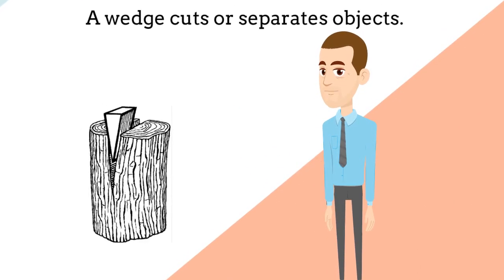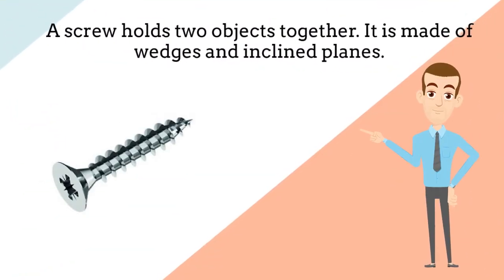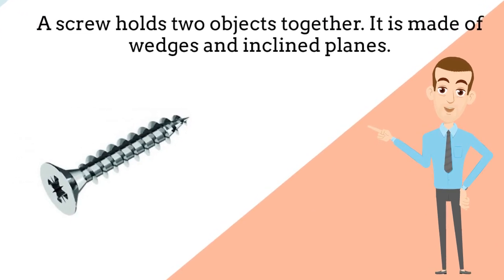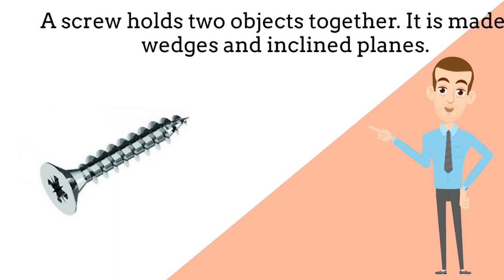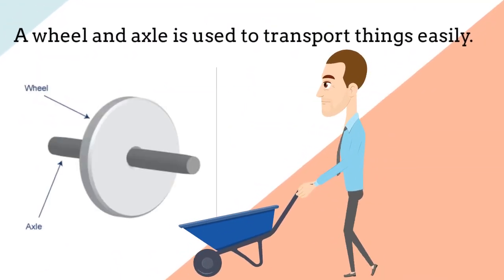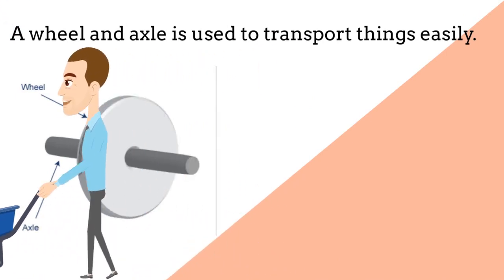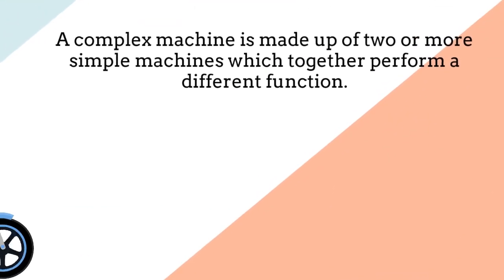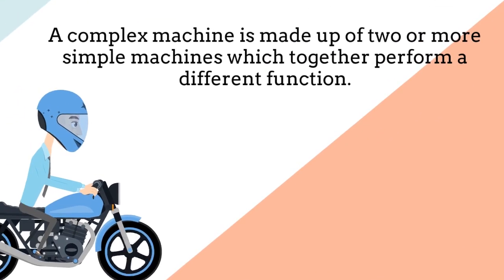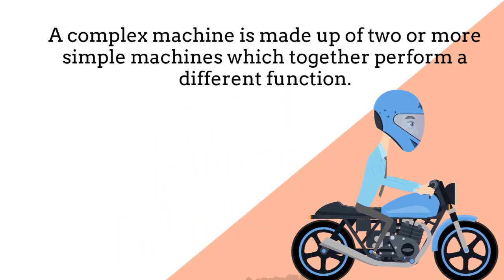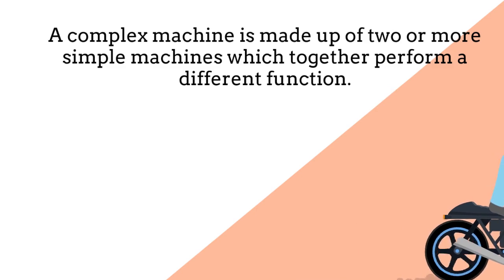A wedge cuts or separates objects. A screw holds two objects together and is made of wedges and inclined planes. A wheel and axle is used to transport things easily. A complex machine is made up of two or more simple machines which together perform a different function.